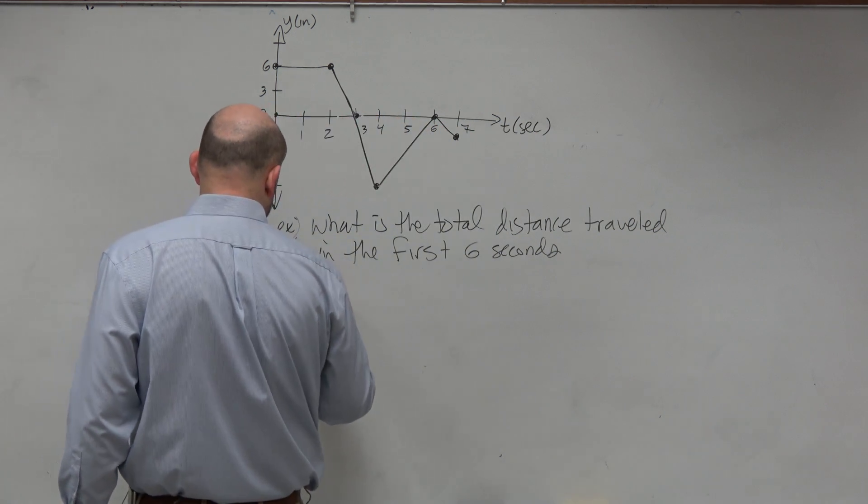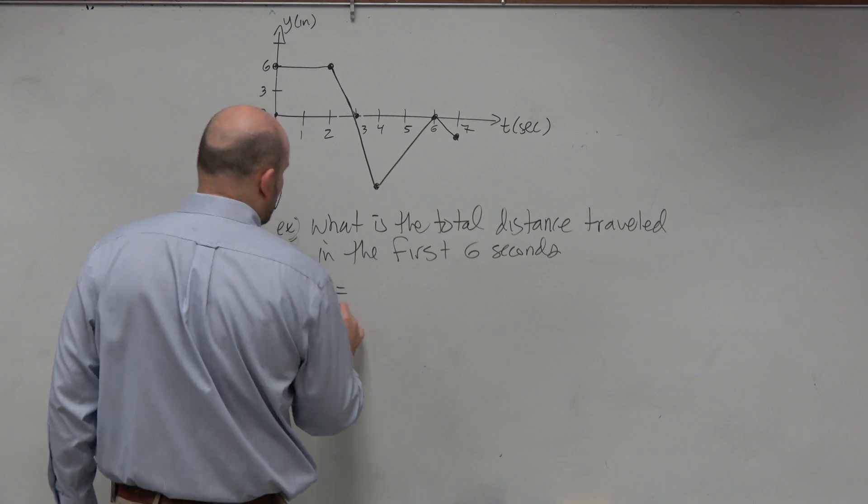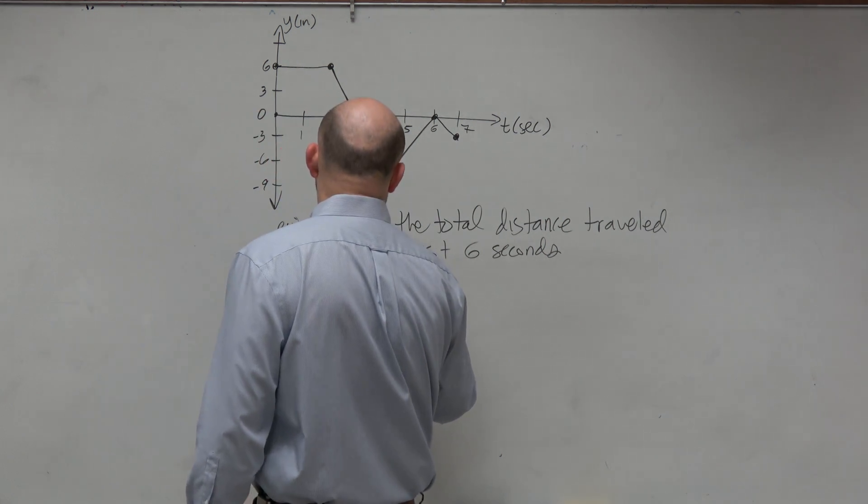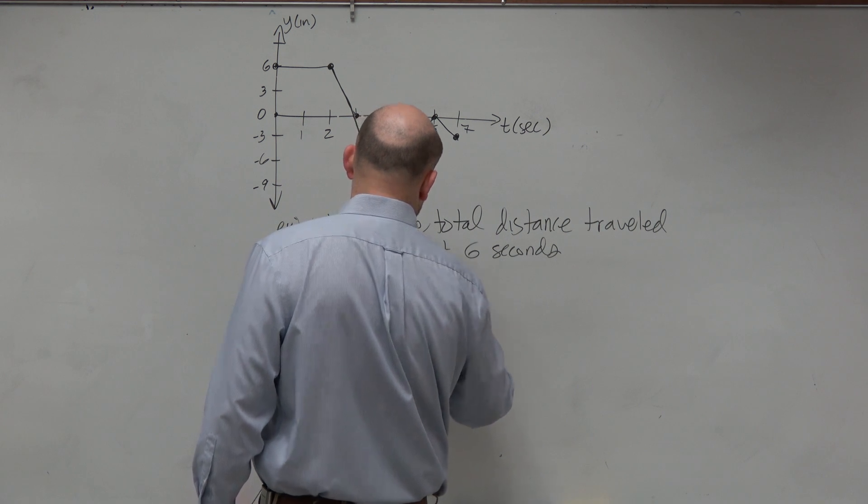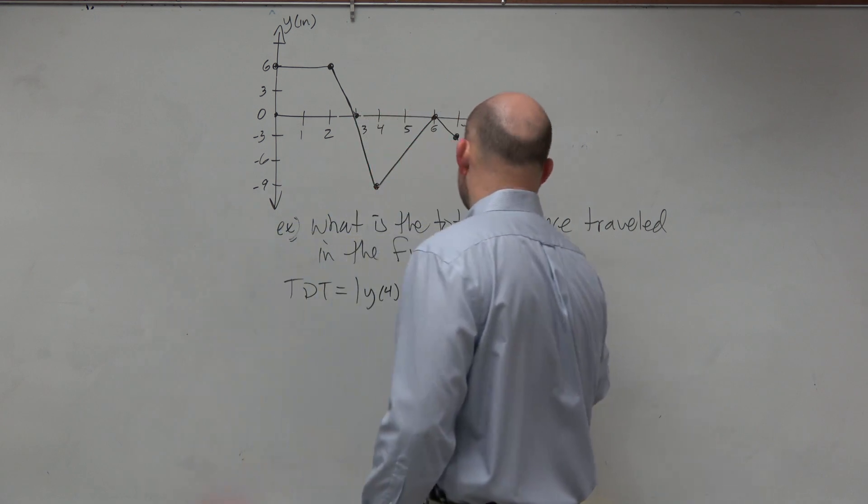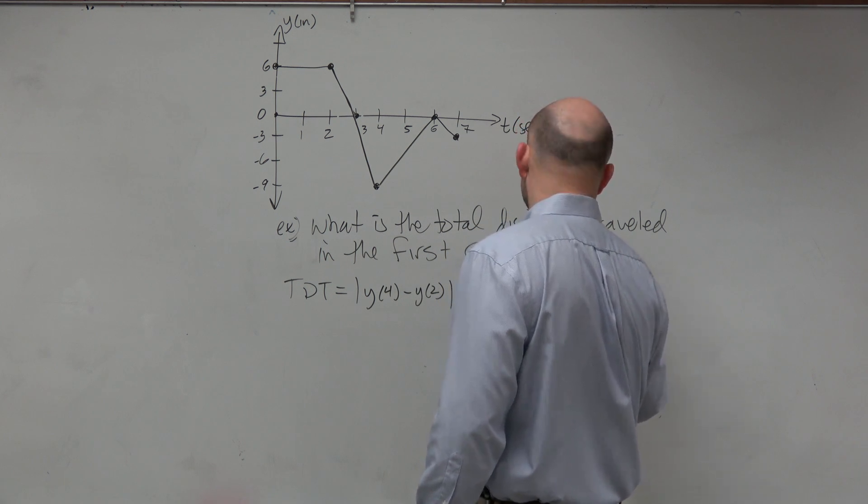So the total distance traveled - I'll use TDT as my acronym - is going to be the absolute value of y sub 4 minus y sub 2 plus the absolute value of y sub 6 minus y sub 4.